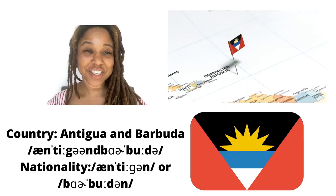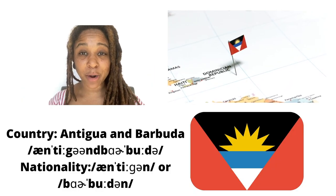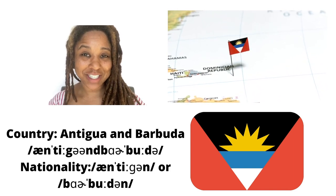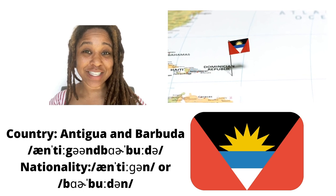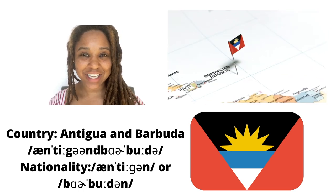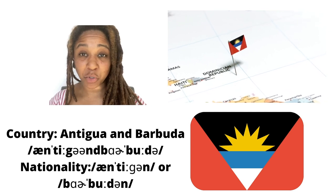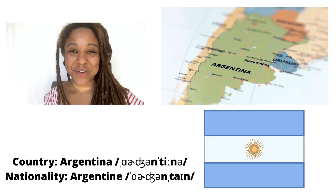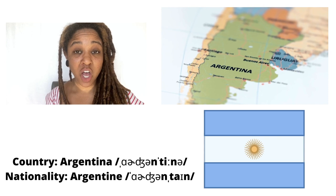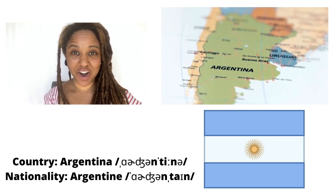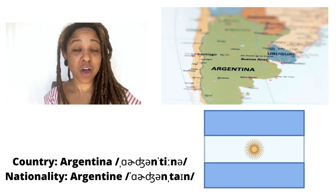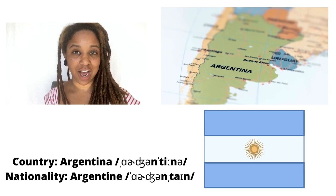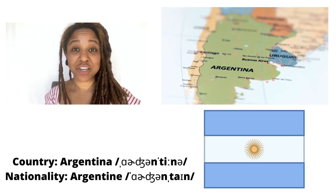First on our list we have Antigua and Barbuda. You might be tempted to say 'Antigua' — it's Antigua. People from Antigua and Barbuda are called either Antiguan or Barbudan. Next we have the South American country of Argentina. People from Argentina are called Argentine, or you may also hear Argentinian.